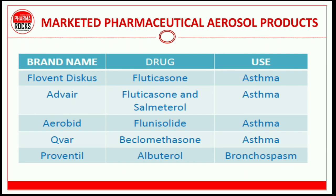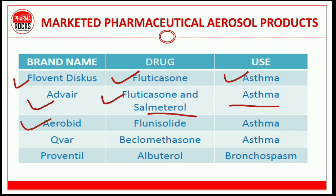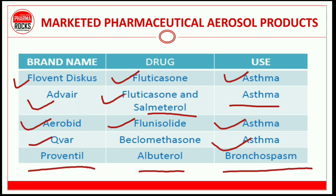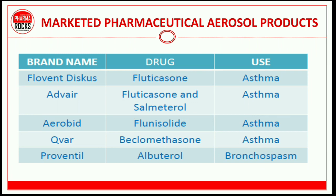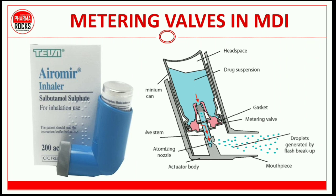Marketed formulations of MDIs include: Flovent Diskus (fluticasone) for asthma; Advair (fluticasone and salmeterol) for asthma; AeroBid (flunisolide) for asthma; QVAR (beclomethasone) for asthma; Proventil (albuterol) for bronchospasm and various respiratory tract infections and disorders. You can also see the Aromir inhaler which contains salbutamol sulfate.